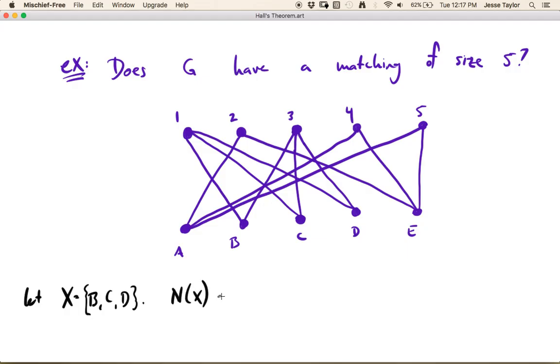Okay, so let's look at the neighborhood of this set. B goes to 1 and 3. C goes to 1 and 3, so nothing new. D goes to 1 and 3, nothing new. Right,